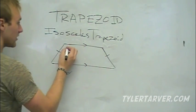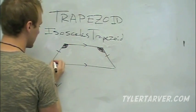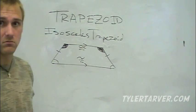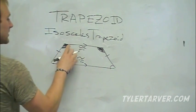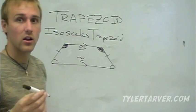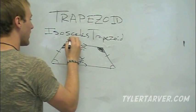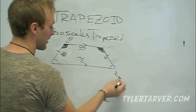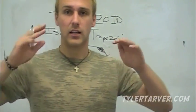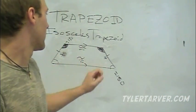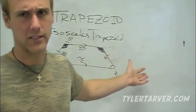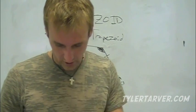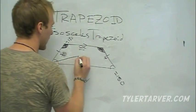Here's the stuff you need to know about an isosceles trapezoid. First, the base angles that match up with each other are congruent — that one's congruent to that one, and that one's congruent to that one. Second, the base angles that are right next to each other — on the same leg — are supplementary: this angle plus this angle equals 180 degrees. Also, the diagonals are congruent.